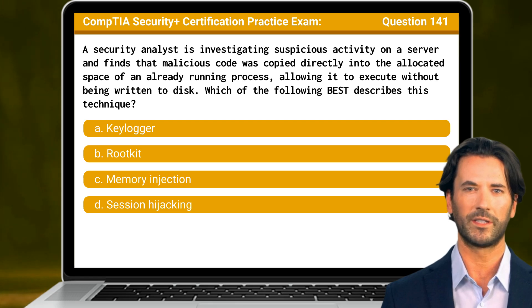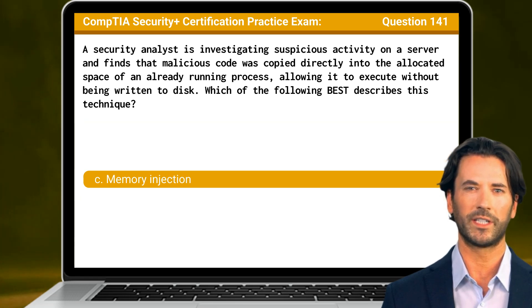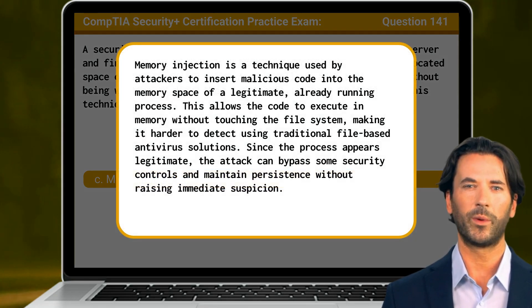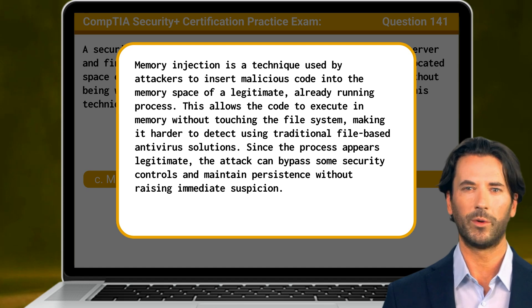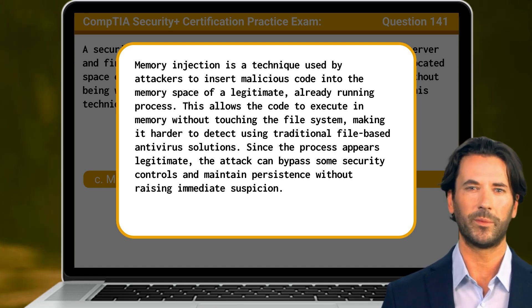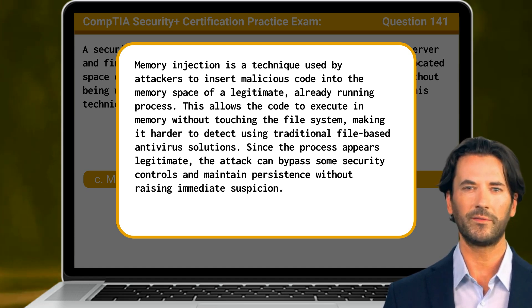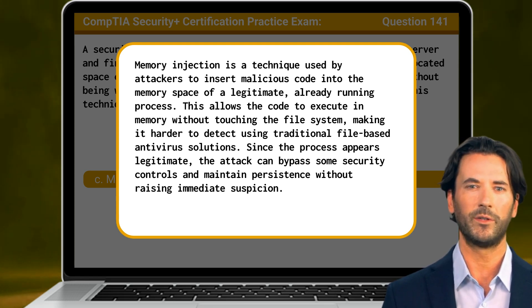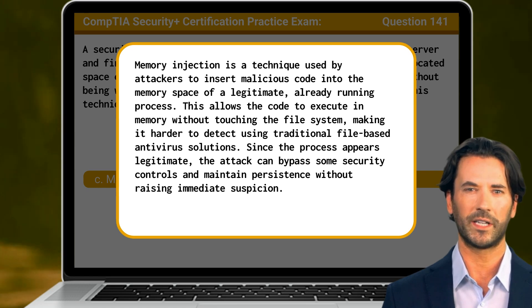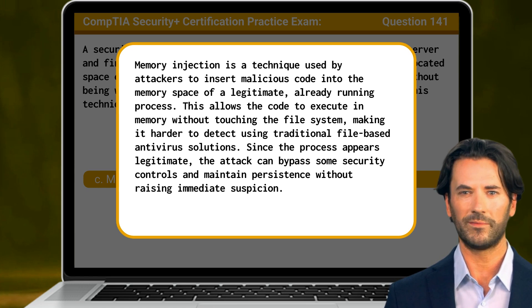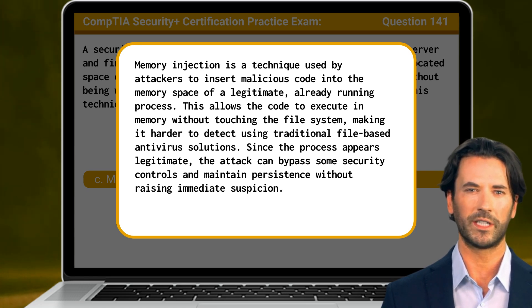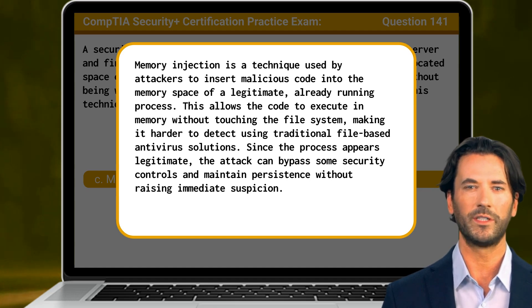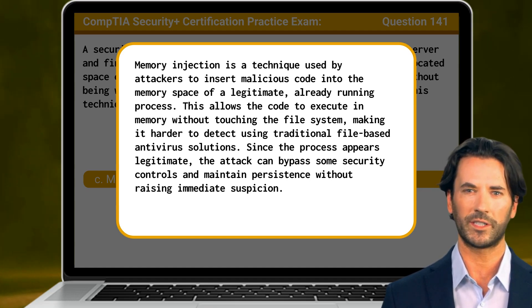The answer is C: Memory Injection. Memory injection is a technique used by attackers to insert malicious code into the memory space of a legitimate, already running process. This allows the code to execute in memory without touching the file system, making it harder to detect using traditional file-based antivirus solutions. Since the process appears legitimate, the attack can bypass some security controls and maintain persistence without raising immediate suspicion.